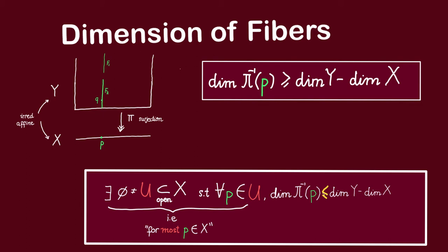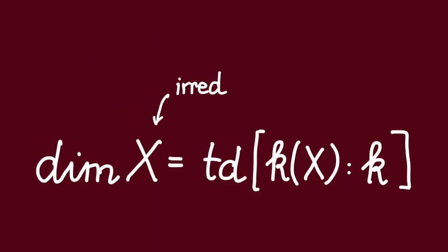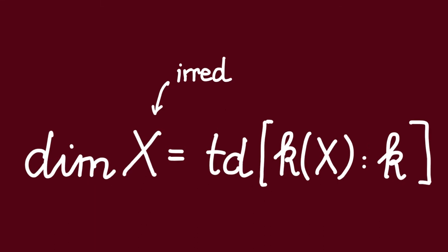But before diving into the proof, we need to recall an algebraic characterization of dimension. We usually like to think of the dimension of X as the transcendence degree of its function field. But be careful — this definition only works if X is irreducible, because the general notion of function field is only defined for an irreducible variety X.